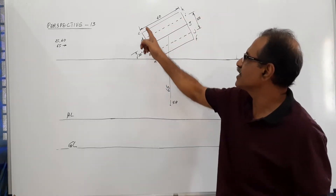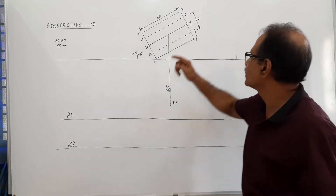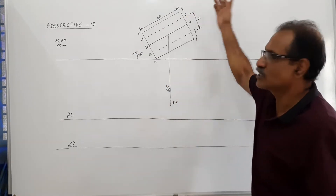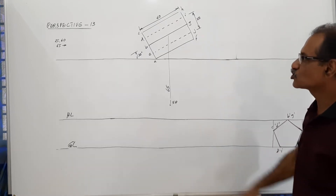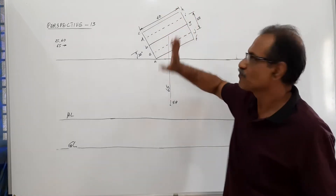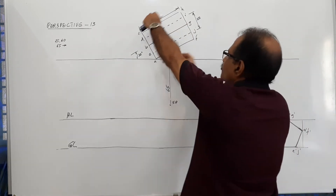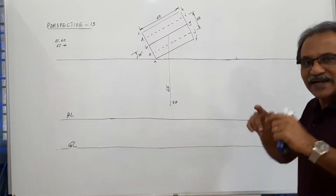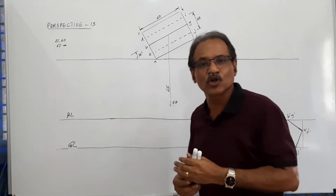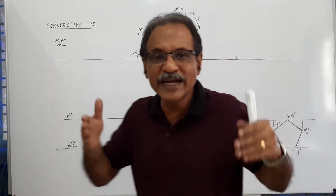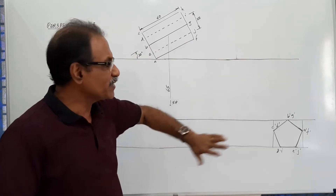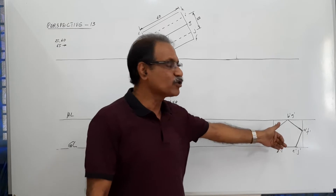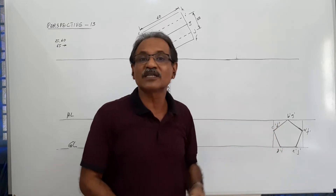Mark A, B, C, D, E on the front face, and F, G, H, I, J on the back face. The length of the prism is 60. This width is transferred here. You definitely have to draw the pentagon to get the width to draw the plan. Since the height of the observer is not given, you must draw a pentagon and find the width.